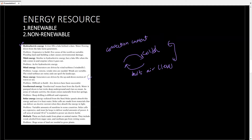Wave energy depends on wind, so wave energy is also indirectly dependent on the sun. Solar energy is completely dependent on the sun. Fossil fuels depend on the sun. Biofuel depends on the sun because everything that grows on earth depends on the sun. So keep in mind which energy resources are dependent on the sun and which are not.